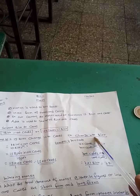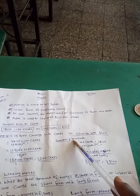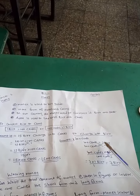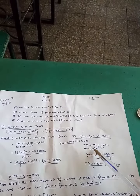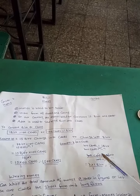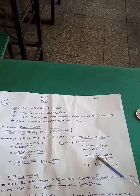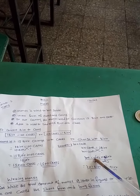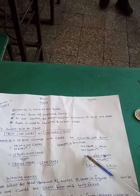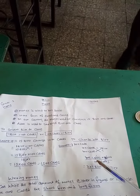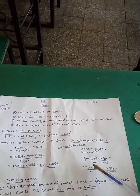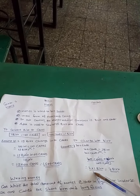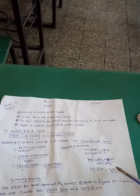Now to change cents into birr. Example: seven hundred cents. One hundred cents is equal to one birr. Seven hundred cents is equal to how much? Seven hundred cents multiplied by one birr divided by one hundred cents — cents by cents cancelled because it changes into birr. Seven hundred divided by one hundred is equal to seven birr.